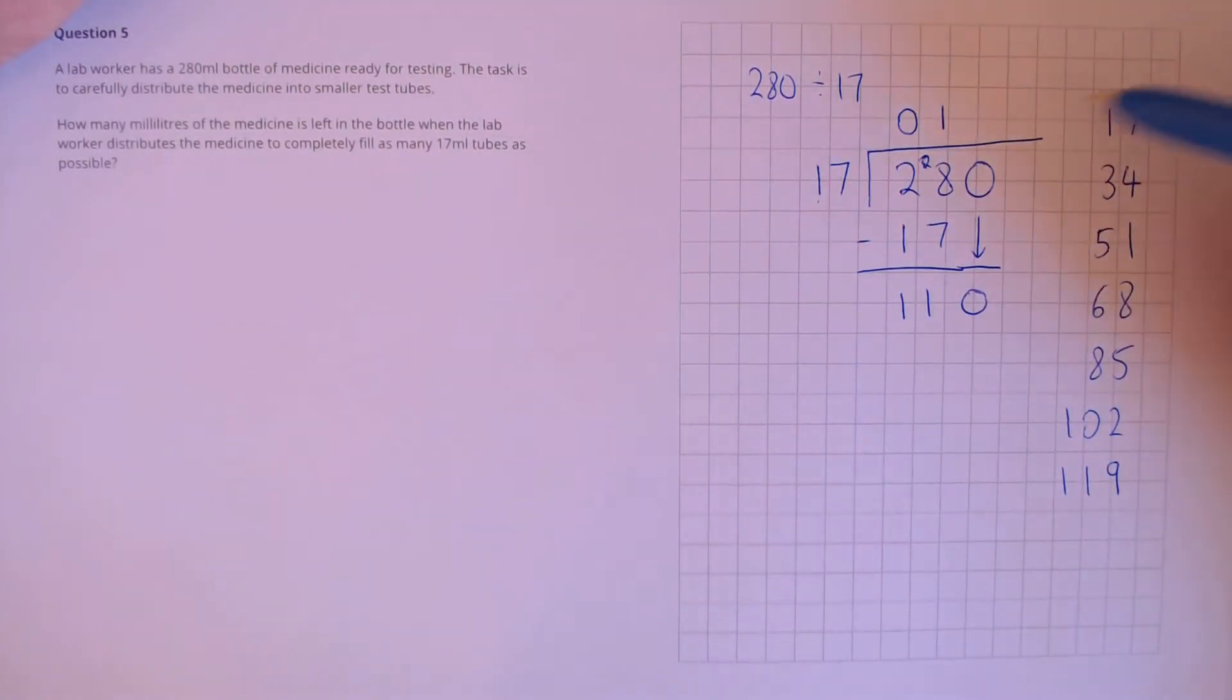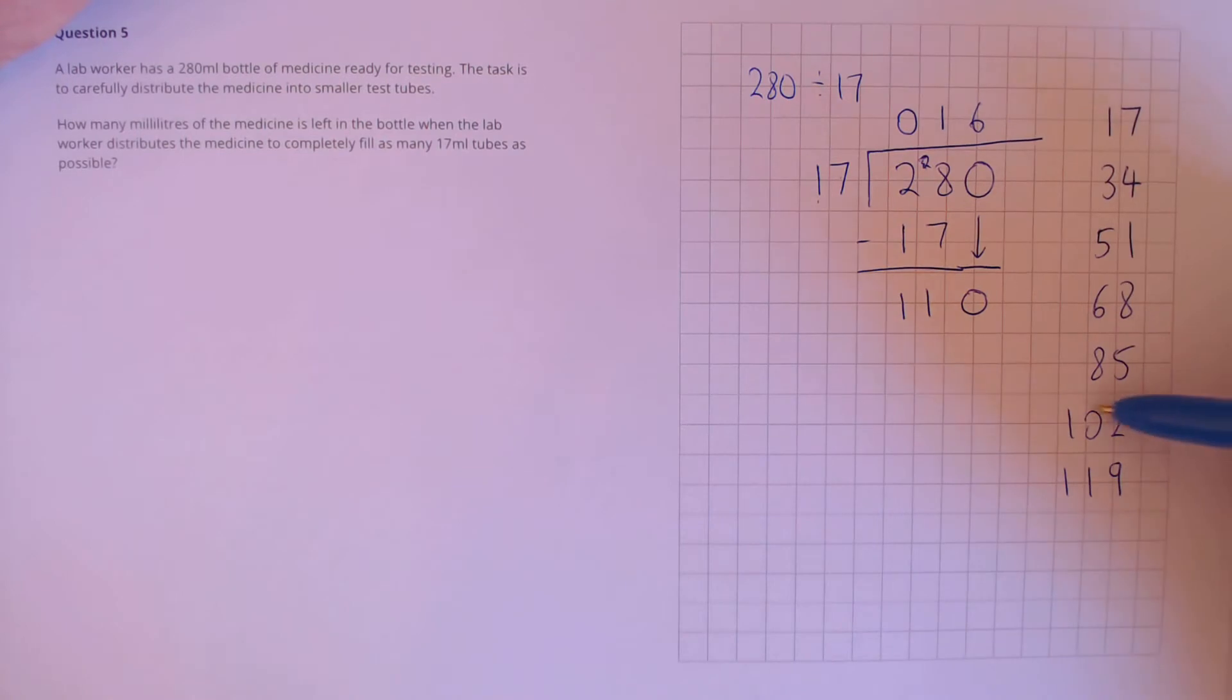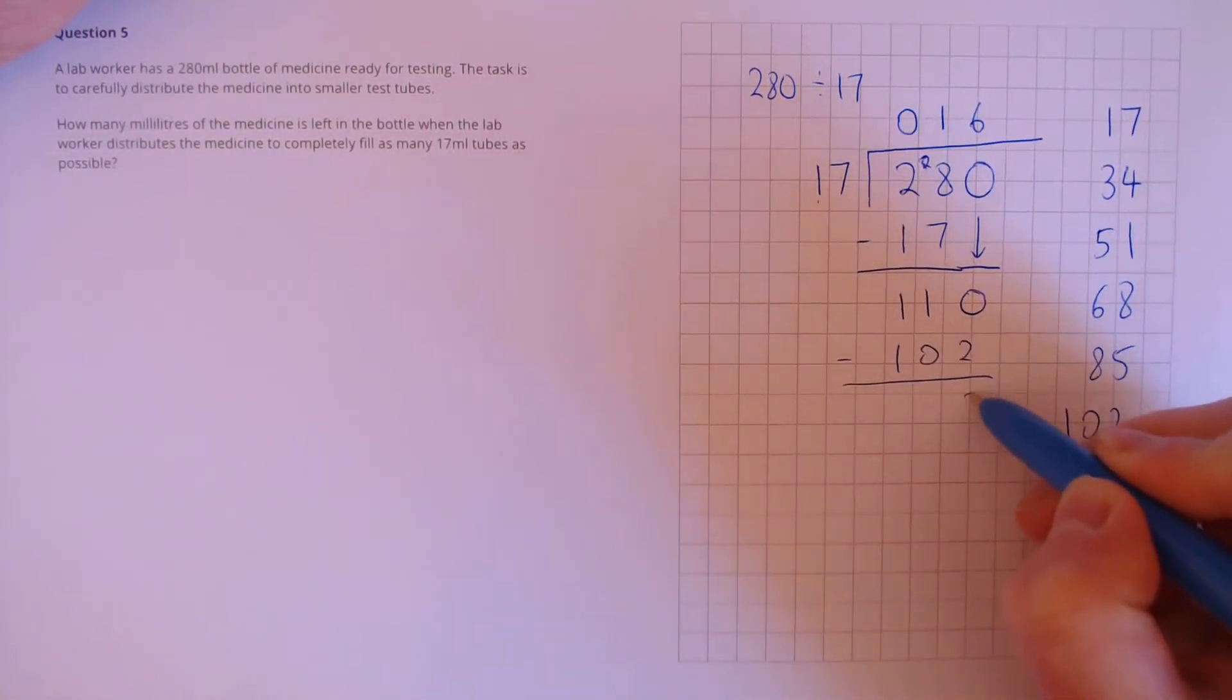So, we can see that 17 goes into 110, 1, 2, 3, 4, 5, 6 times. So, we'll put a 6 there. Next, take away 102. From this, that leaves us with 8.